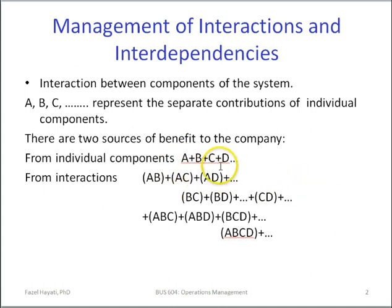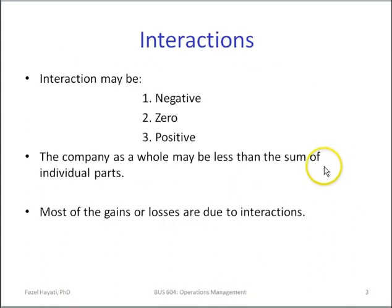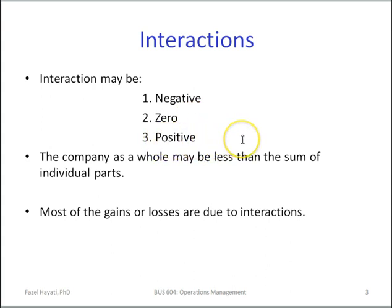Two-way interactions involve two managers, two departments, two shifts, or two components of the system. We also have three-way interactions: when A, B, and C interact, we have A-B-C; when A, B, and D interact, we have A-B-D, and so on — and four-way interactions as well. As you can see, a considerable amount of contributions come from interactions among the parts, so the interactions must be managed. The interactions may produce a negative outcome, they may cancel each other out and be zero, or they may produce — and we hope — a positive interaction or outcome.